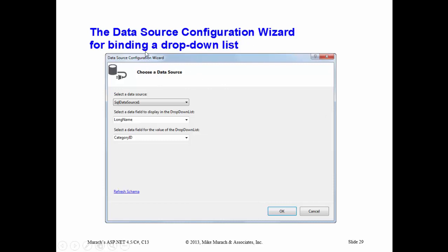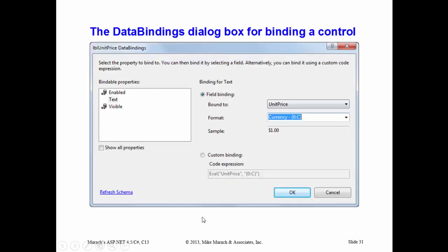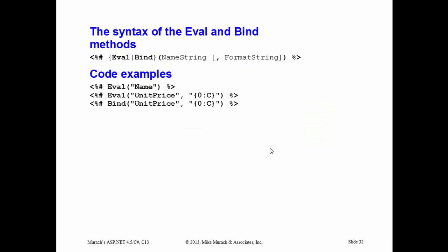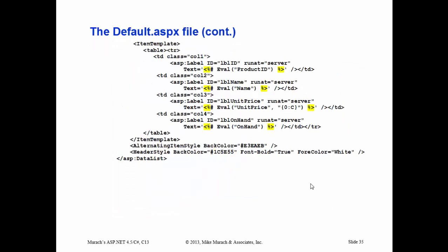The next thing is the data source configured wizard for binding to the drop-down list. Basically you click the smart menu and walk through a wizard: what data do I want to connect to, what field do I want to include, what data do I want to store, what field do I want to display, and what field do I want to be the value. Typically you want to show the long name but store the ID. In code: data text field is what's displayed, data value field is what's stored. You can have auto post back so selecting a different value submits the page and gets additional data. You can also format columns — for example, formatting unit price to look like currency.